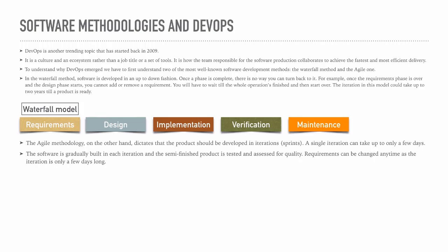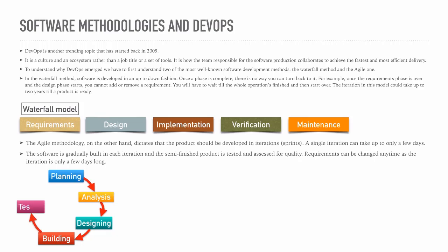The agile methodology dictates that the product should be developed in iterations called sprints. A single sprint can take only a few days. The software is gradually built in each iteration, and the semi-finished product is tested and assessed for quality. Requirements can be changed anytime, as the iteration is only a few days long. The agile model cycle goes: planning, analysis, design, building, testing — then back to planning.